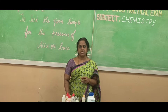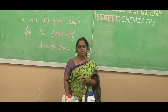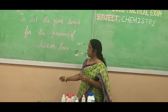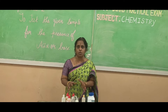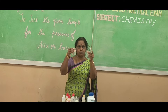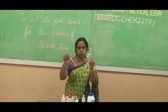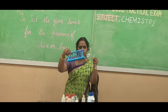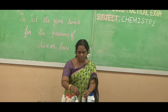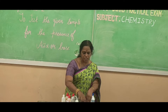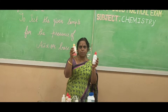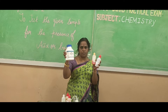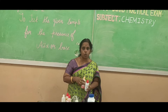Welcome everyone to today's Chemistry Practical online session. In Chemistry you have 4 experiments, and today we are going to determine whether a given solution is an acid or a base. For this experiment, you will need the given solution, a test tube, and a test tube stand. There are 3 indicators to test whether the given solution is acid or base: phenolphthalein, methyl orange, and sodium carbonate. Let us start with the experimental part.